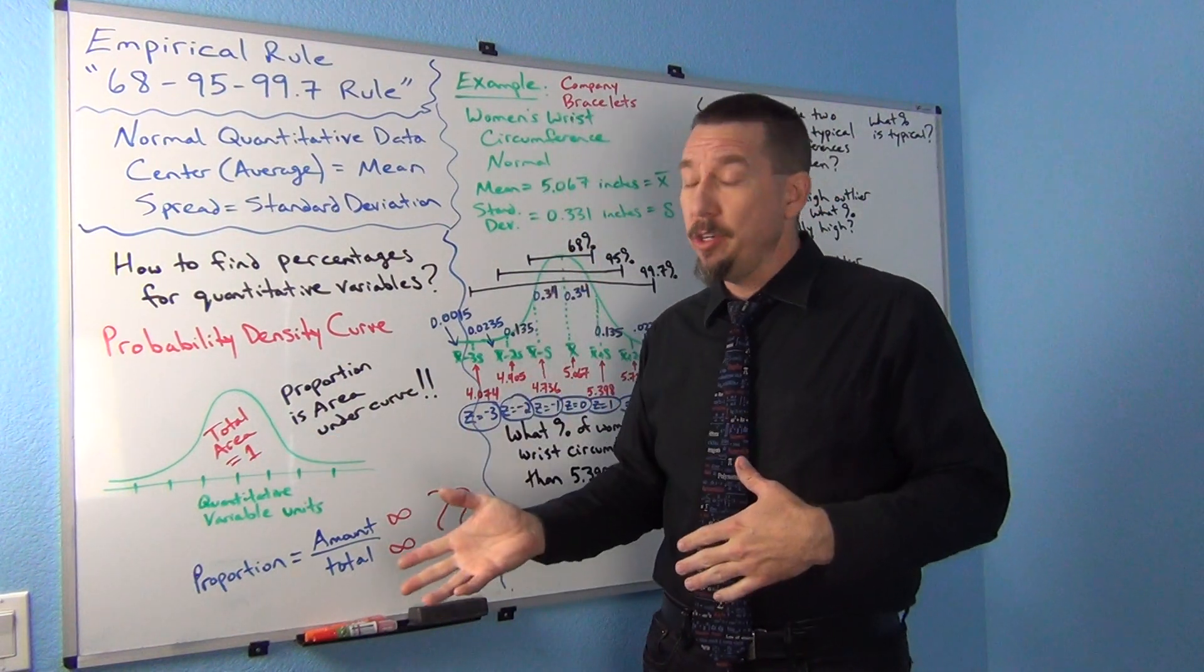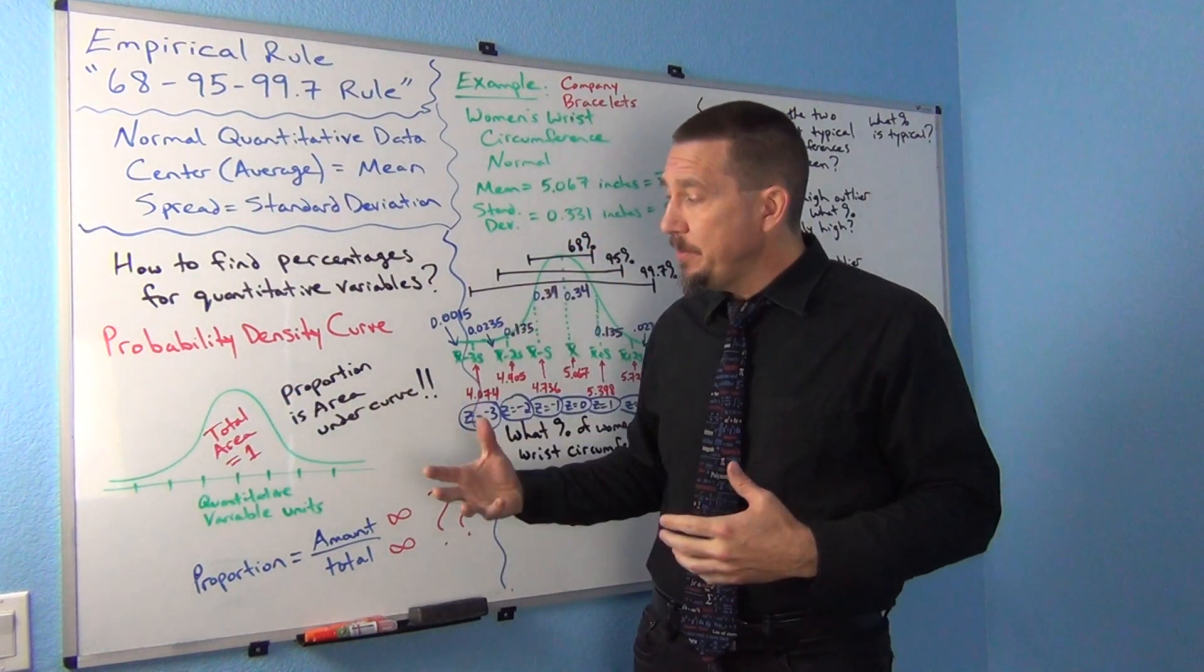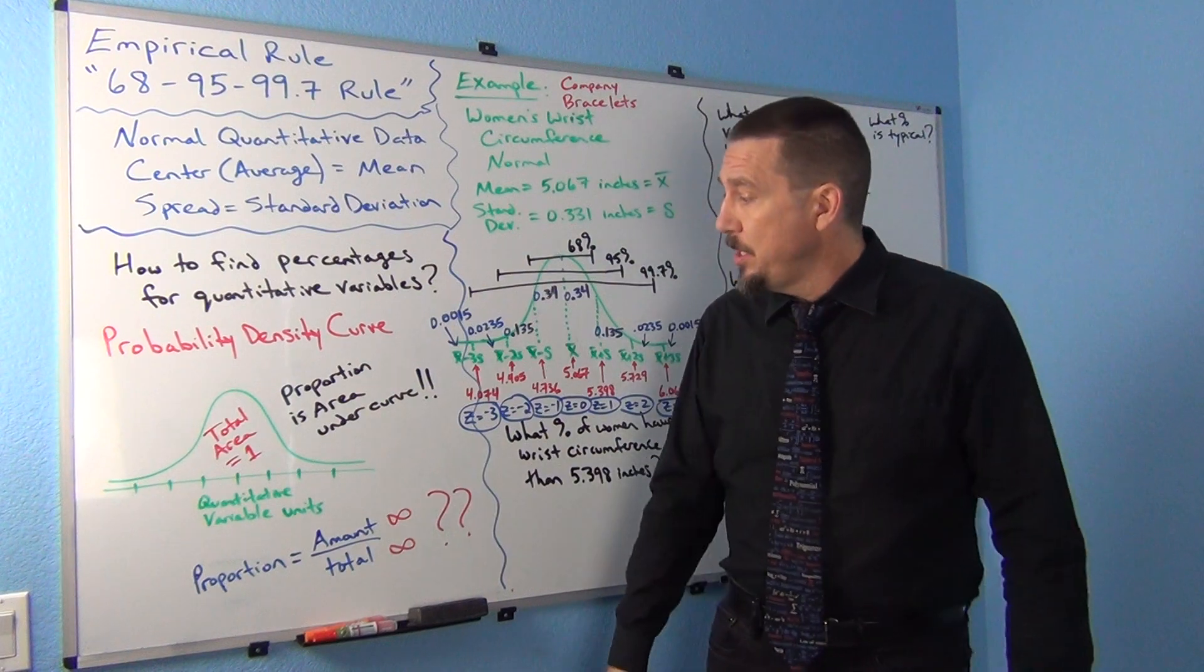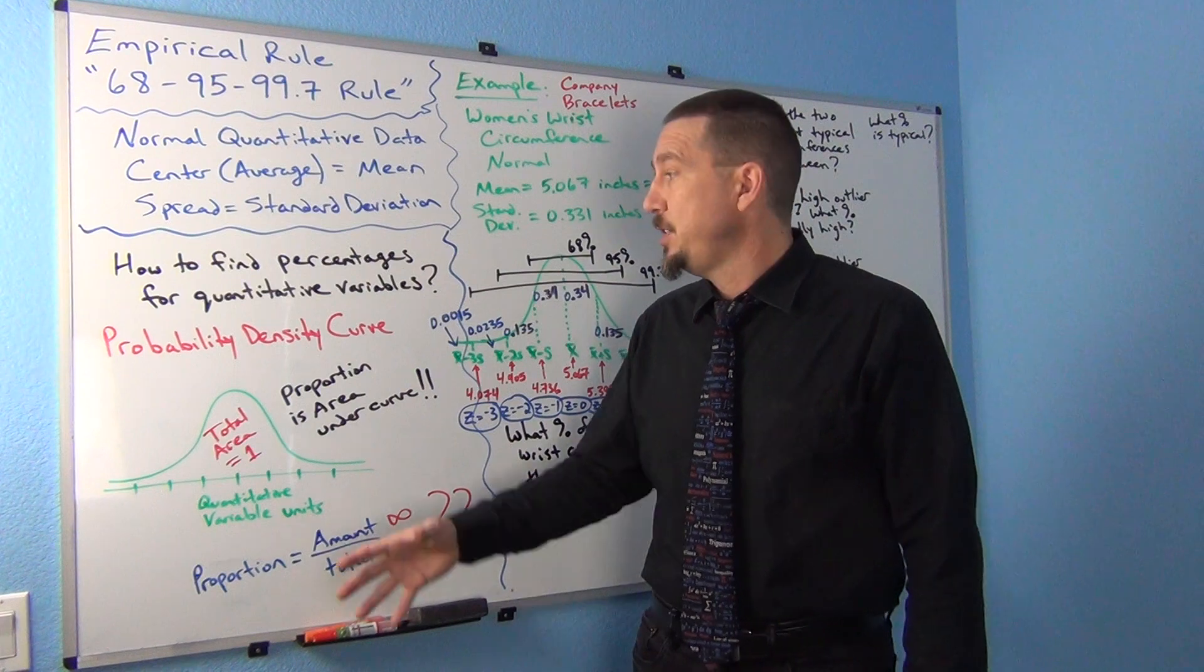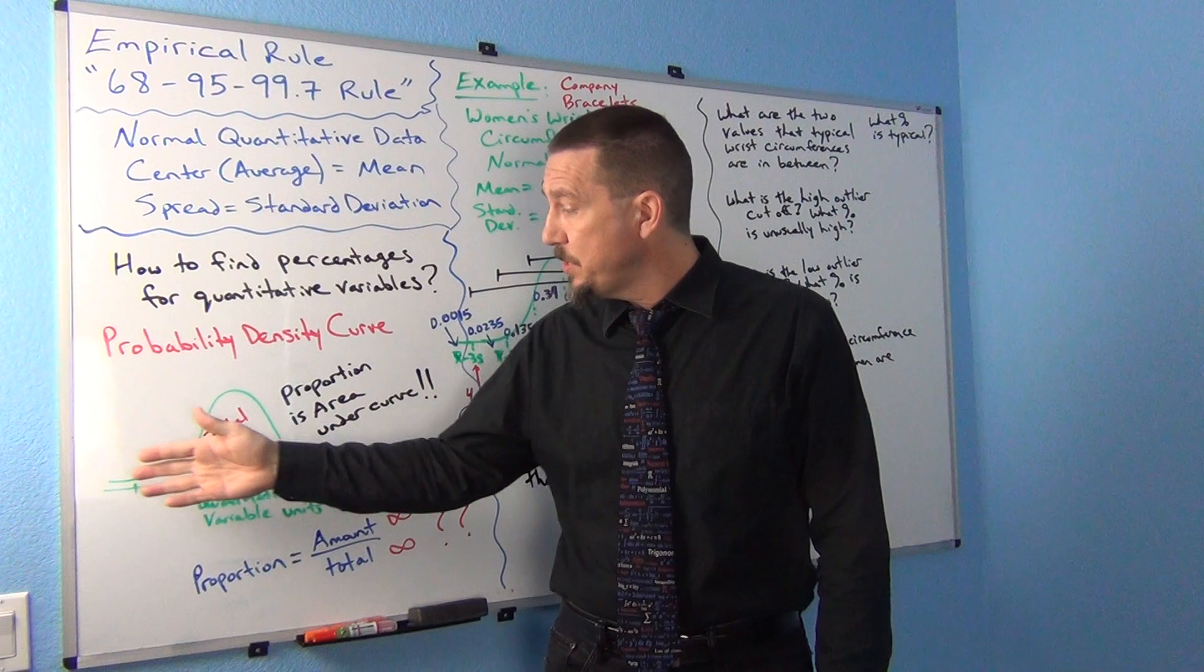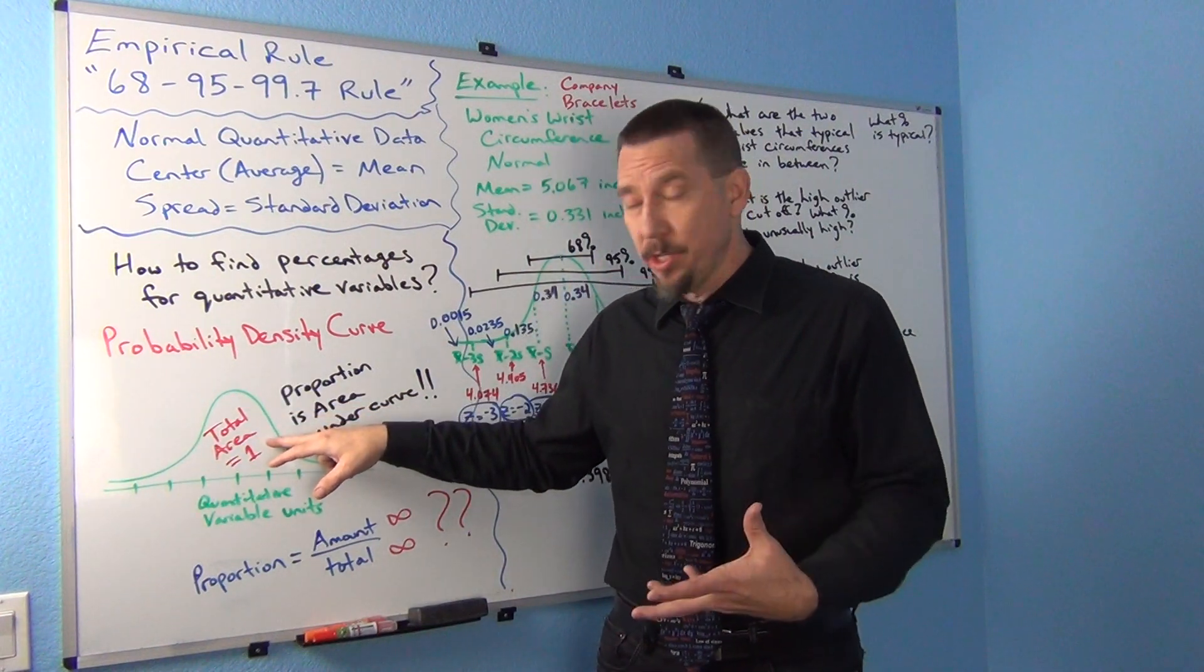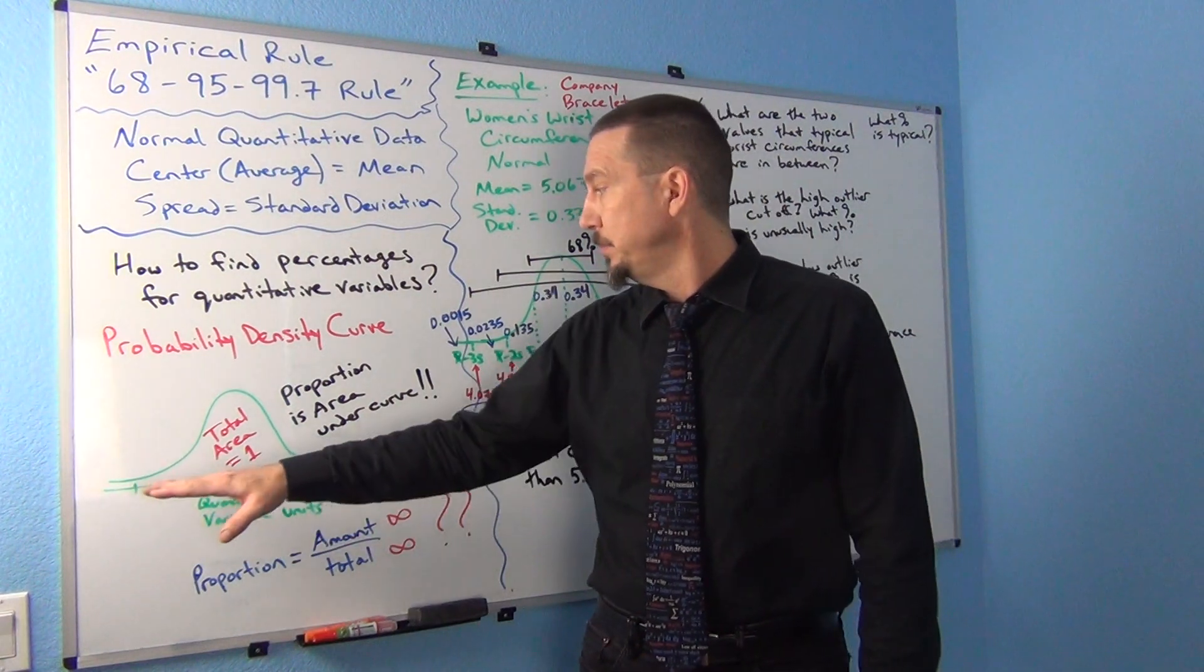And they would use basically the total area under the curve would be one. Remember, one is equal to 100 percent. So think of this as the total proportion. And then if you wanted to find a percentage or a proportion, you would just look for the area under the curve at a certain place. So I could actually use that to actually figure out these proportions that deal with normal data. One thing to keep in mind in these curves, and this is a really important idea that's used throughout statistics, is this idea of the area under the curve is the proportion and then the quantitative data is the scale on the bottom.